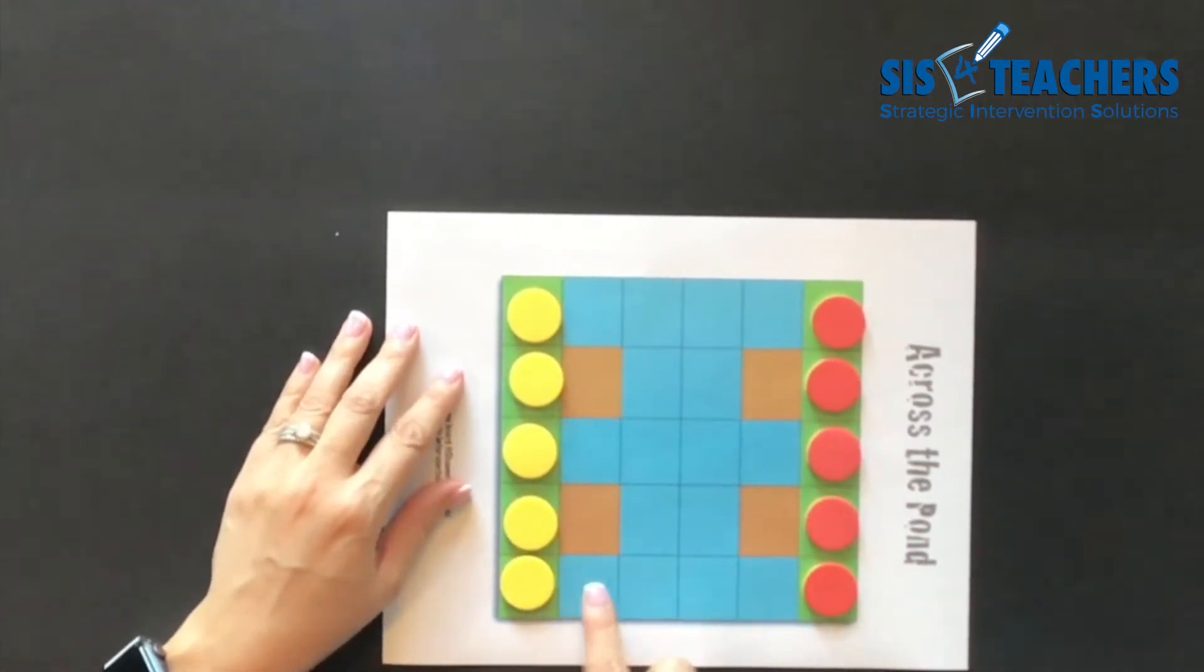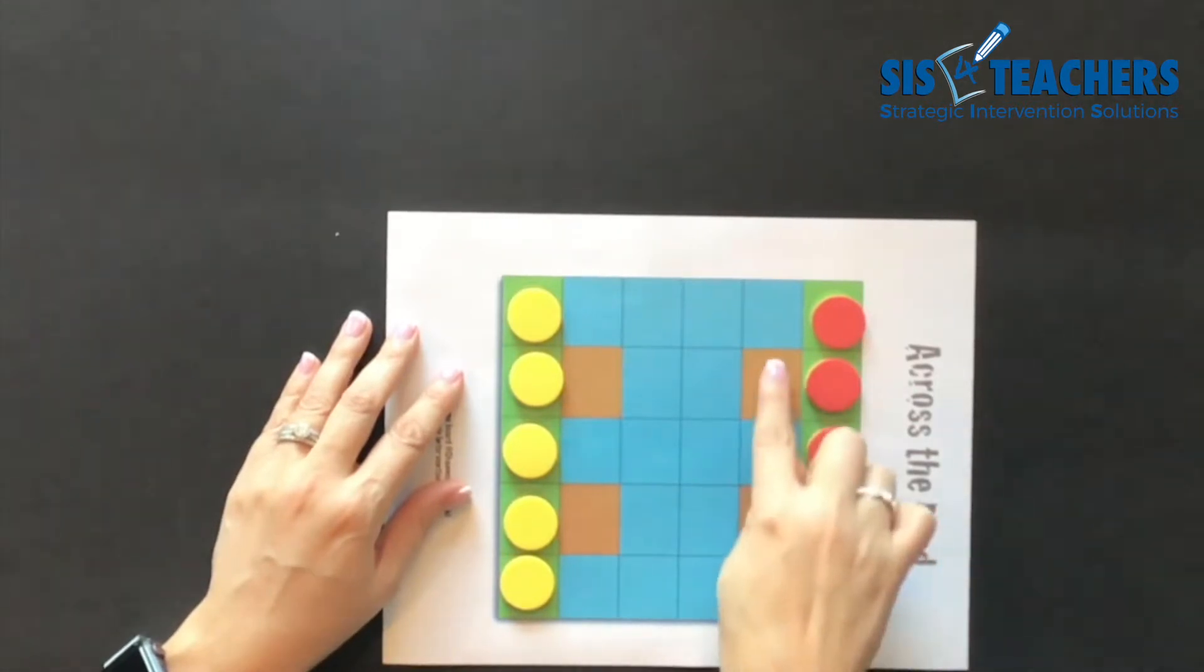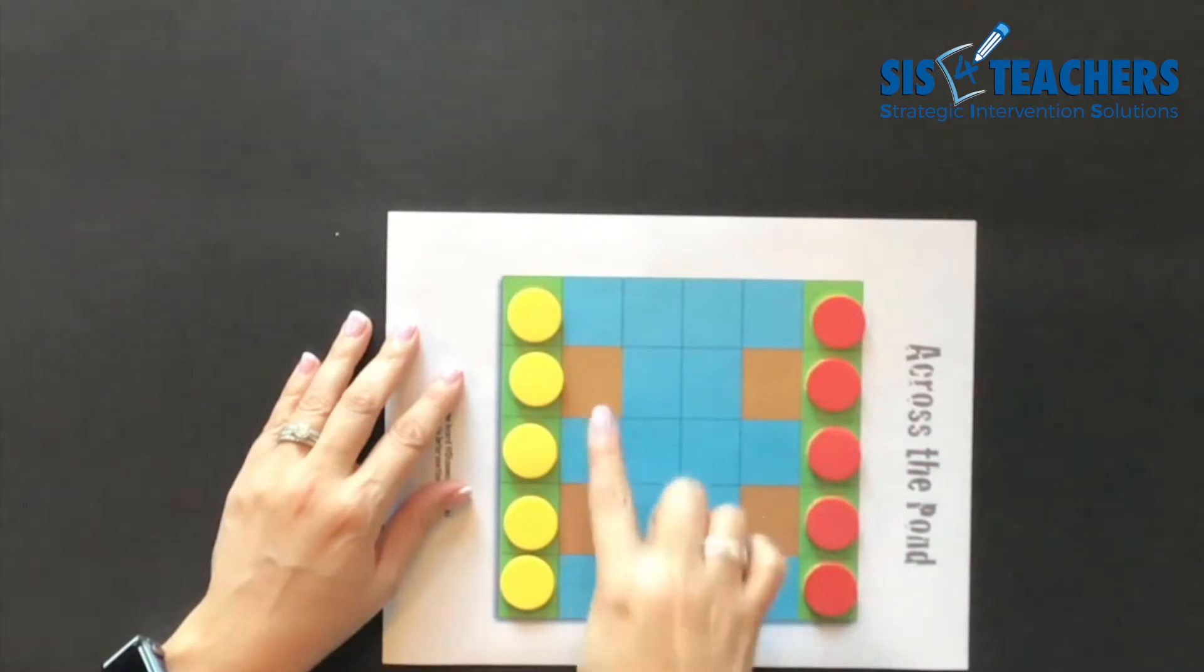On the game board, you can move in any direction. You can move forward, left, right, backwards. You can even move diagonal in this game. The four brown squares are representative of logs.